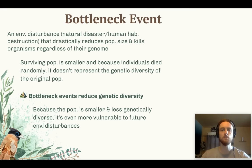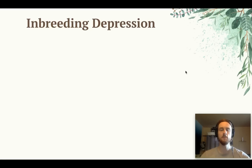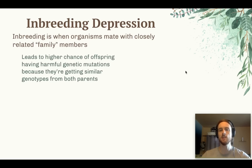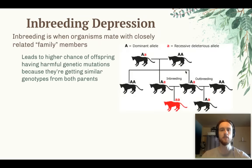Another problem that results from an especially small population size is inbreeding, which is when organisms mate with close family members. This is harmful for populations because it increases the chances of a deleterious or harmful mutation — the genomes of the parents are so similar that they're more likely to pass on two copies of a harmful allele. Let's look at a diagram to help us understand.